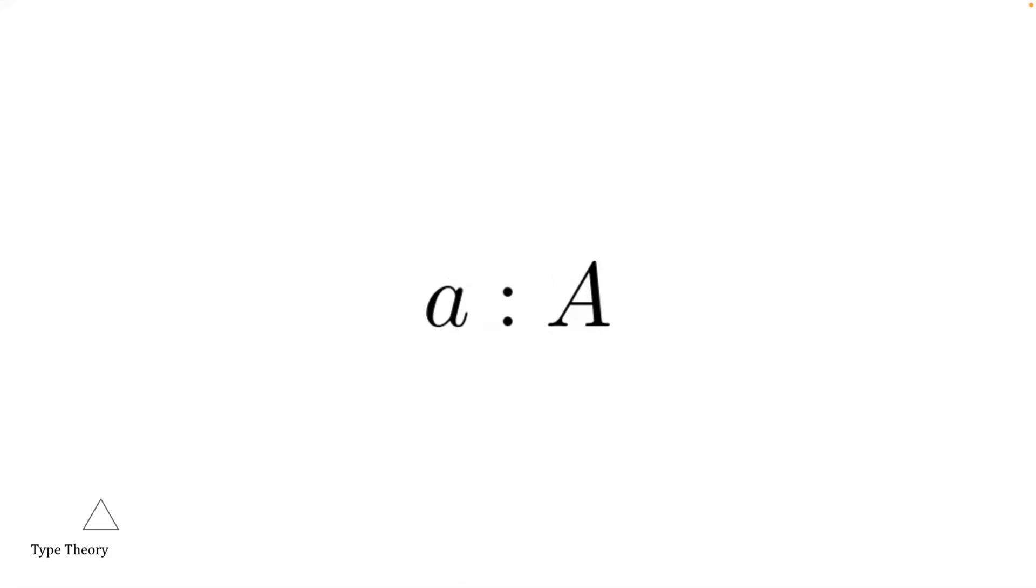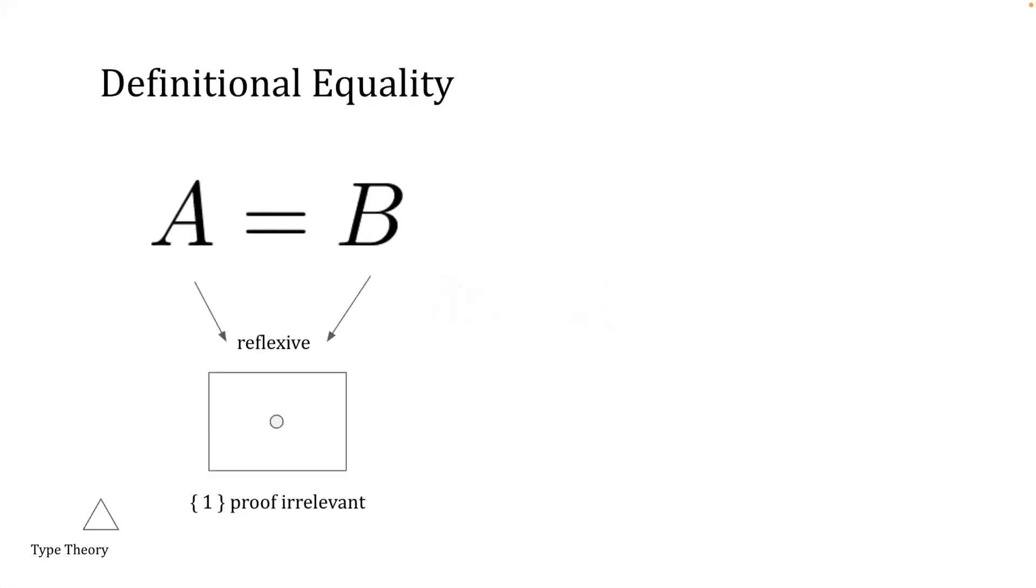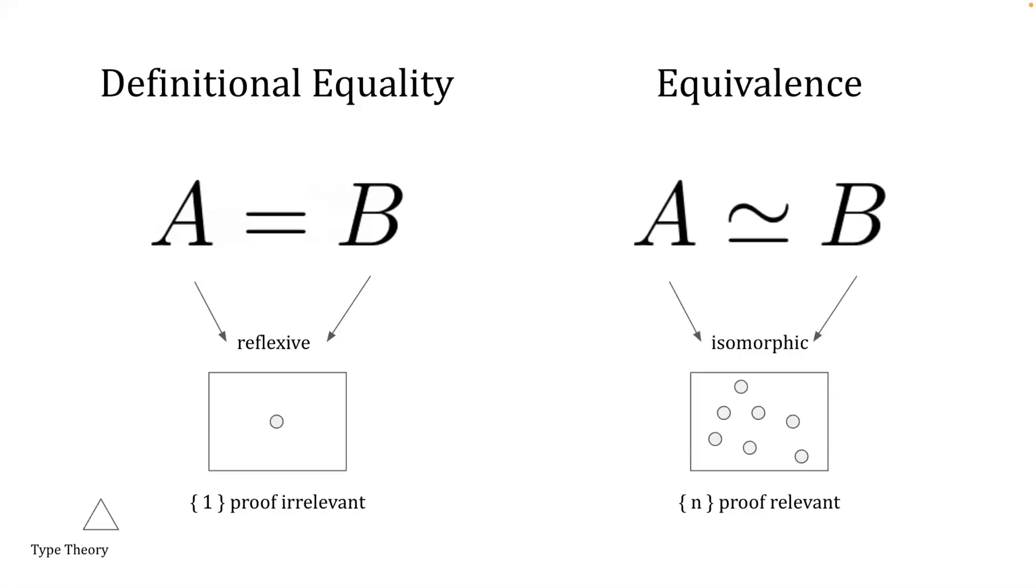Different type theories facilitate and restrict what we are able to express. In Lean, propositions are proof irrelevant, meaning if a proposition is true, there is only one proof. For example, in Lean, the definitional equality A equals B can only have one proof. If there are more than one proofs, then they are equal.